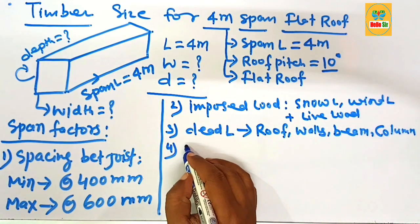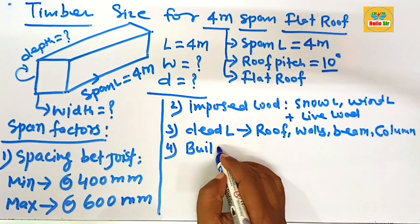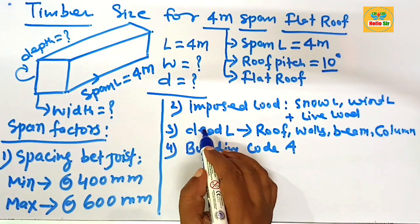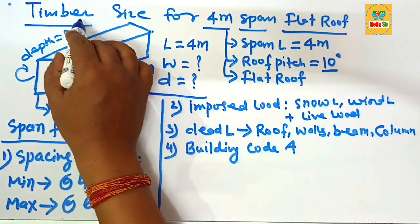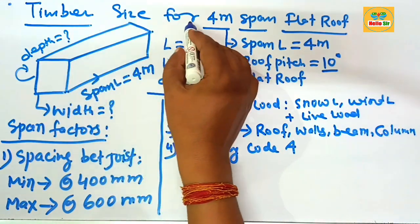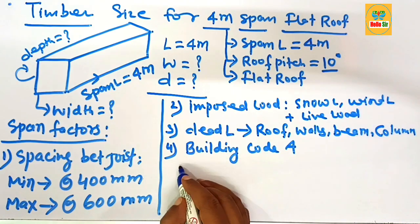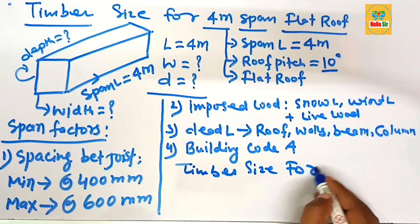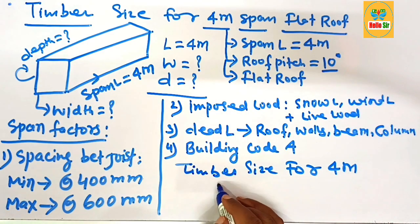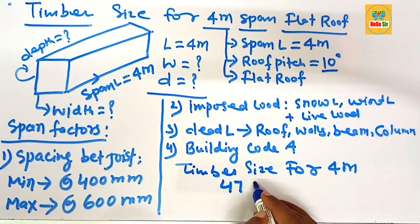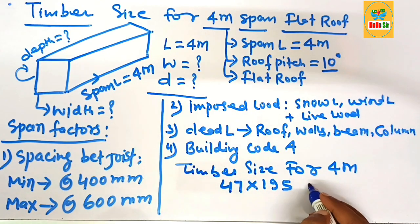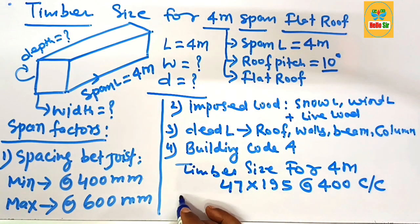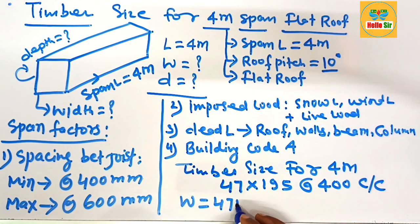The fourth major factor is the building code in your area. These are the major factors that decide the timber size. For a four meter span flat roof, the timber size required is 47 x 195 at 400 mm center spacing.